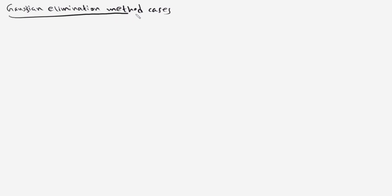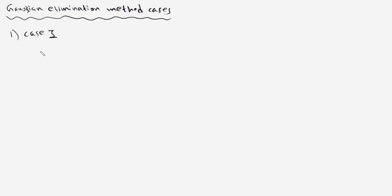In the previous session we covered the Gaussian elimination method. When constructing a triangularized form to solve a linear system using the Gaussian method, there are three cases. Let's take a quick example to illustrate each case.